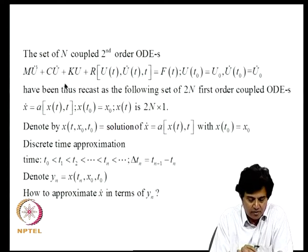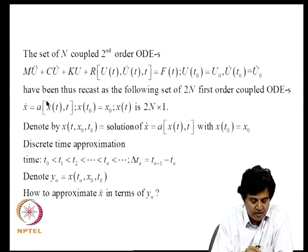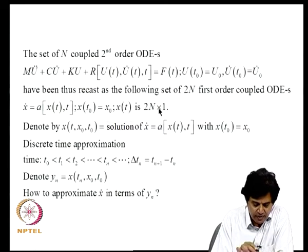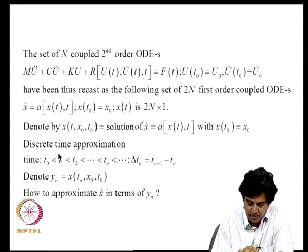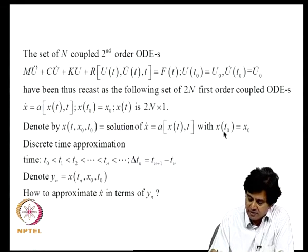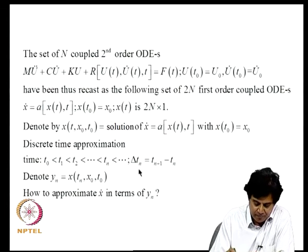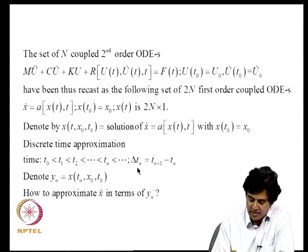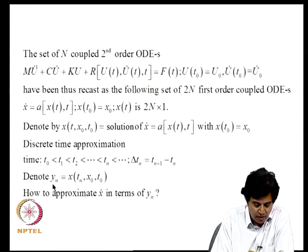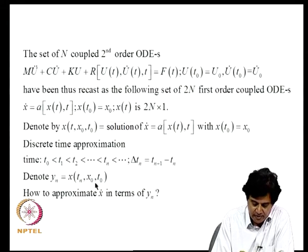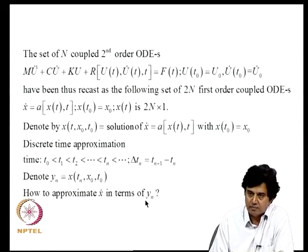The set of N coupled second order ordinary differential equations in configuration space has been recast as 2N first order coupled ordinary differential equations. I introduce notation X(X_naught, T_naught) to denote the solution with initial condition X(T_naught) equal to X_naught. In discrete time approximation, time is discretized as T_naught, T1, T2, TN with steps delta TN, and the state at TN is denoted YN. The main question is how to approximate X dot in terms of YN.